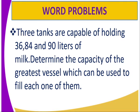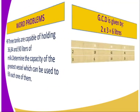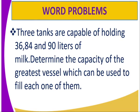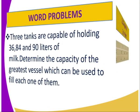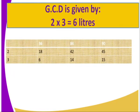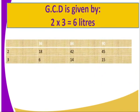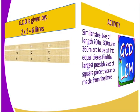Sometimes we can be given word problems. For example, three tanks are capable of holding 36, 84 and 90 litres of milk. We need to determine the capacity of the greatest vessel which can be used to fill each one of them. What you are required to do is get the greatest common divisor of the given numbers. Using the table, divide all numbers by 2 to get 18, 42 and 45, then divide by 3 to get 6, 14 and 15. There is no other common factor to divide 6, 14 and 15, so the GCD of 36, 84 and 90 is 2 multiplied by 3, which equals 6.